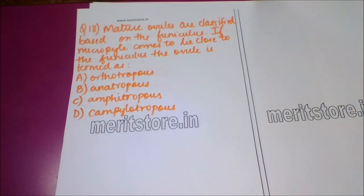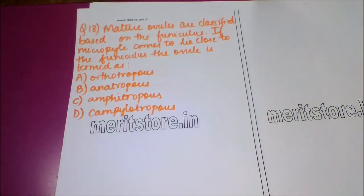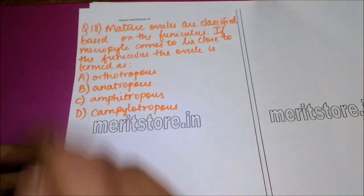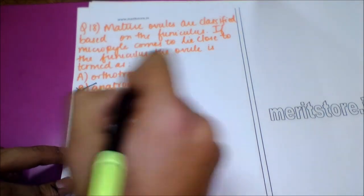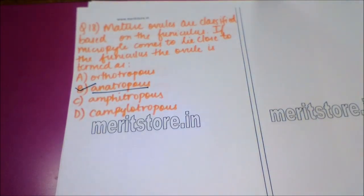The next question is: mature ovules are classified based on the funiculus. If the micropyle comes to lie close to the funiculus, the ovule is termed as? Option A: orthotropous. Option B: anatropous. Option C: amphitropous. Option D: campylotropous. The answer is option B — anatropous — because in an anatropous ovule the micropyle comes close to the funiculus.